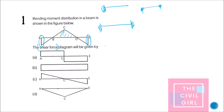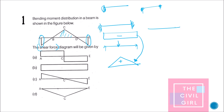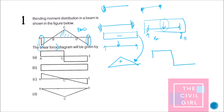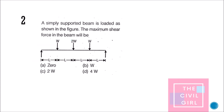For a point load acting in a simply supported beam the BMD looks like a triangle, and for the fixed-end moments the moment diagram is negative at the ends. Both diagrams are superimposed for a fixed-end beam with a point load in the middle. So this is the beam configuration for the given bending moment diagram. The shear force diagram will simply have reactions Ra and Rb, giving the stepped shear force diagram — the answer is option A.